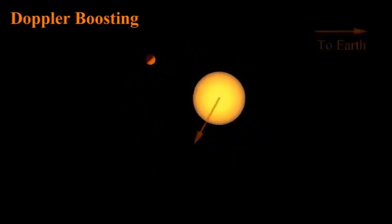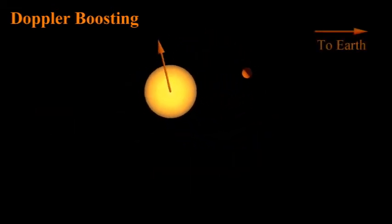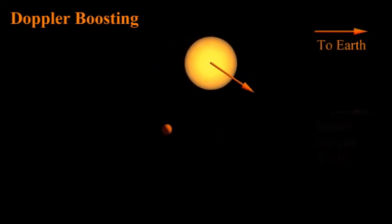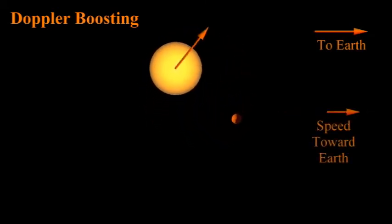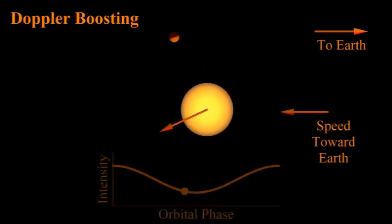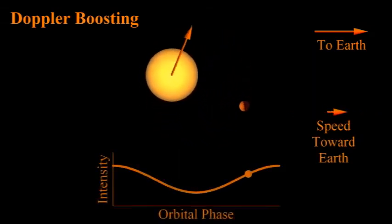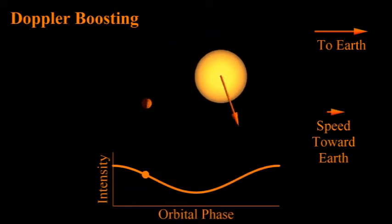A planet and its star orbit one another about their center of mass. As a result, a massive planet will make the star wobble. As the star wobbles, Doppler boosting results in an increase in the light intensity as the star moves toward the Earth, and a decrease as it moves away from the Earth.